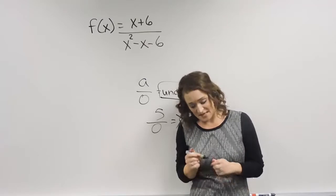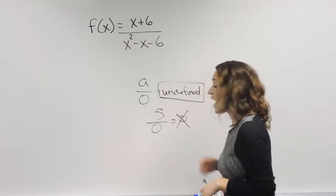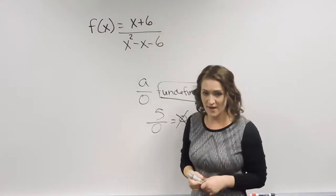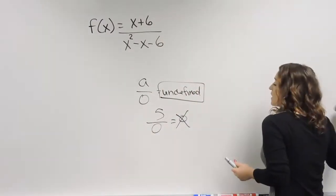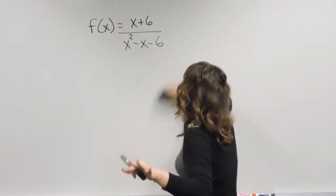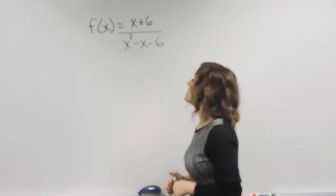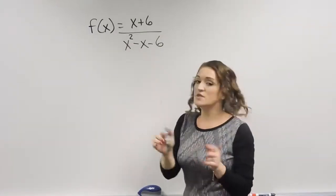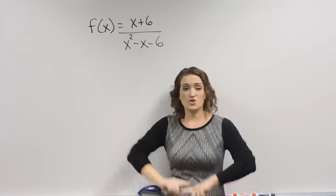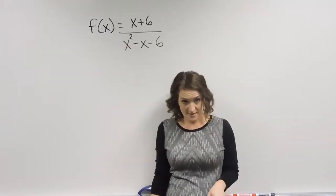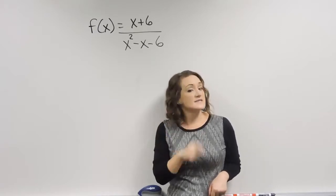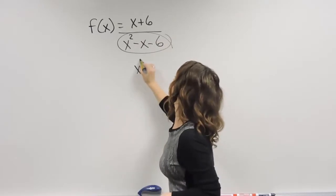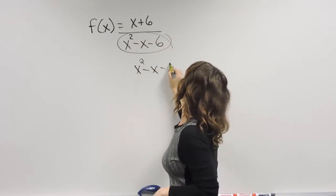A rational expression is undefined when the denominator equals zero. What we need to do is figure out what's going to make that denominator equal zero. You take the denominator, set it equal to zero, and solve it. So my denominator here is x squared minus x minus six.